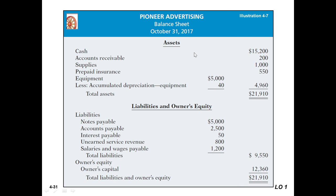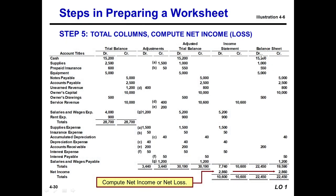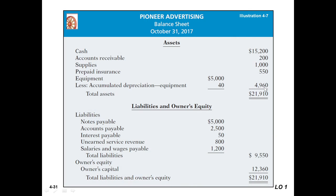The balance sheet represents a particular point in time — October 31st, 2017. On the asset side, we have cash, supplies, prepaid expenses, and equipment. Note that accumulated depreciation is forty dollars, and equipment is five thousand dollars. According to accounting rules, we subtract accumulated depreciation from equipment: five thousand minus forty gives us four thousand nine hundred sixty.